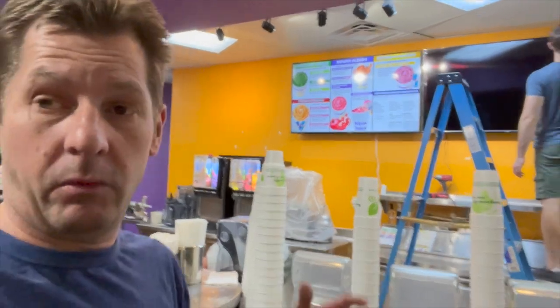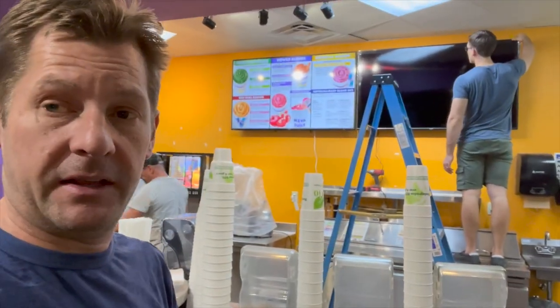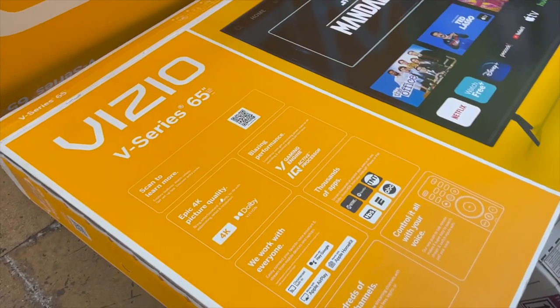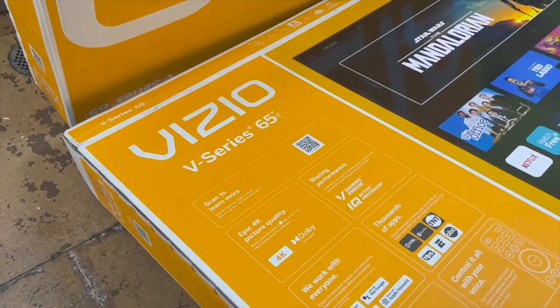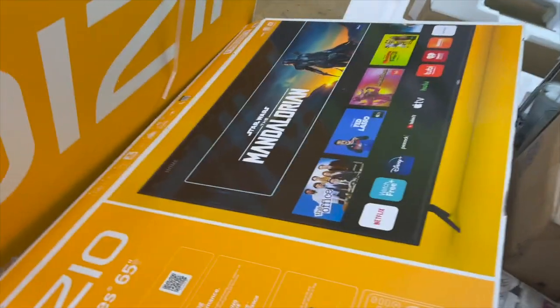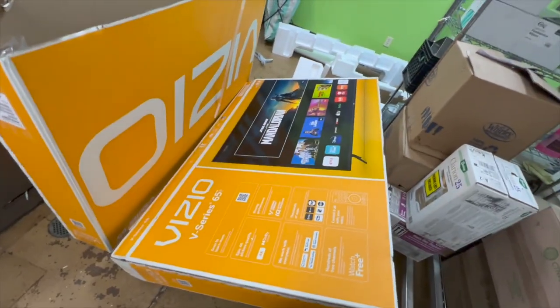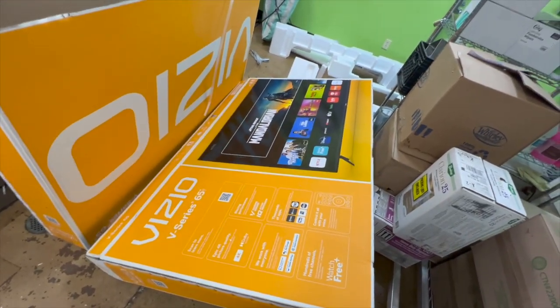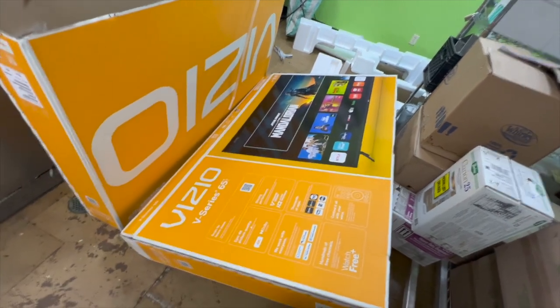So now we're going to walk you through setting up the Radiant system. We use the Vizio V-series monitor. The V-series is great—we got these for I think $399 or $449 at Sam's Club.